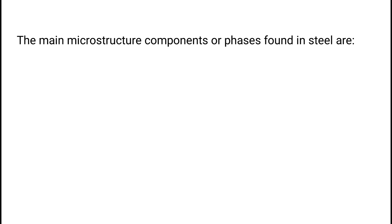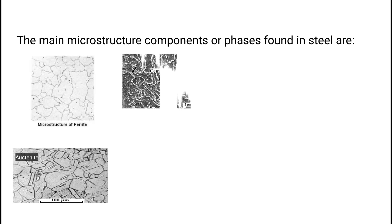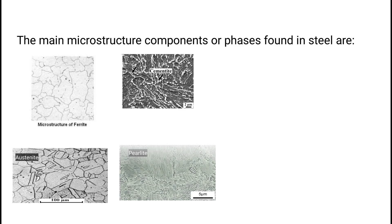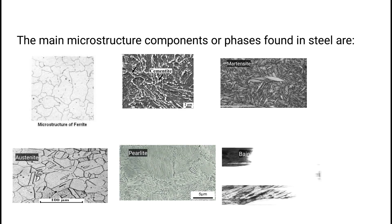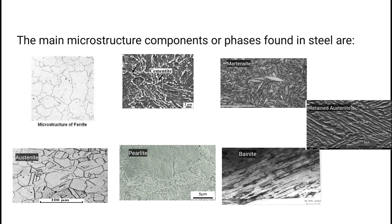The main microstructure components or phases found in steel are: one, ferrite; two, austenite; three, cementite; four, perlite; five, martensite; six, bainite; seven, retained austenite.